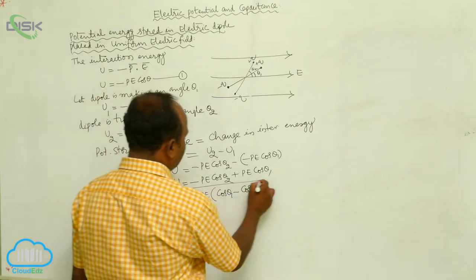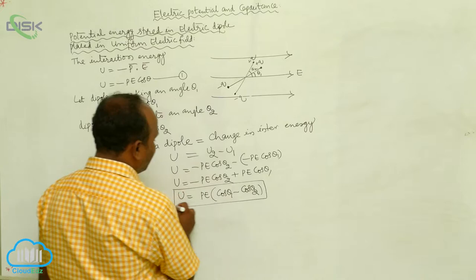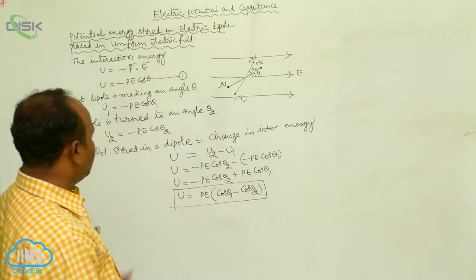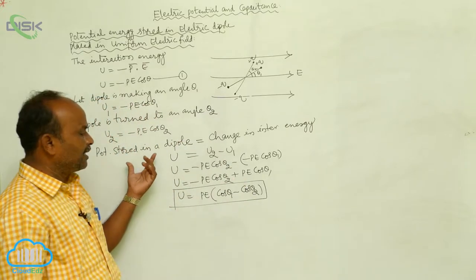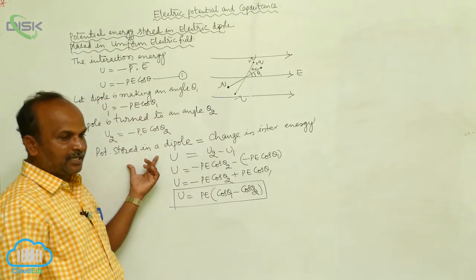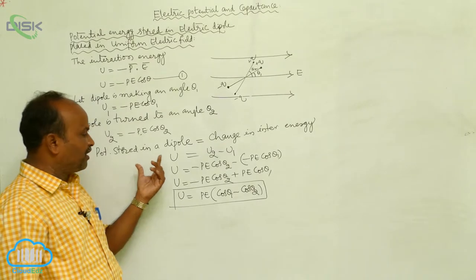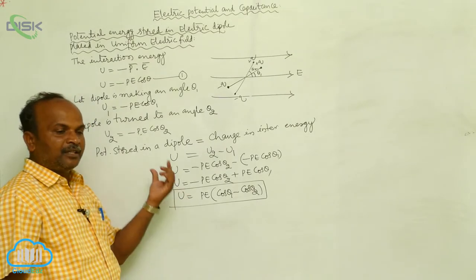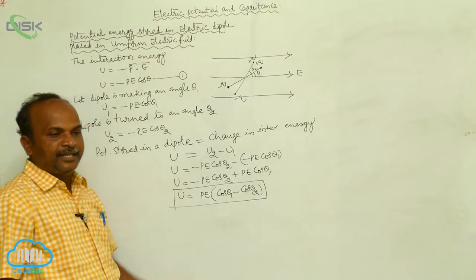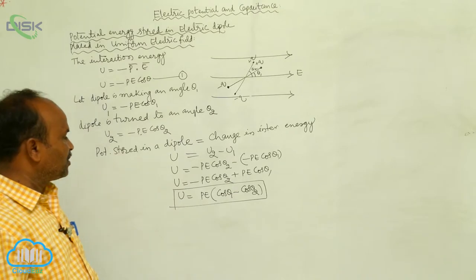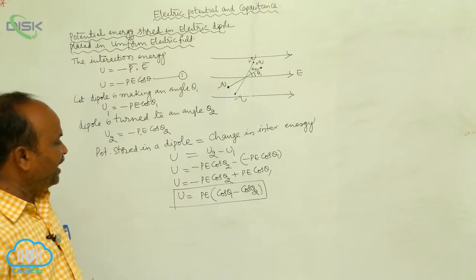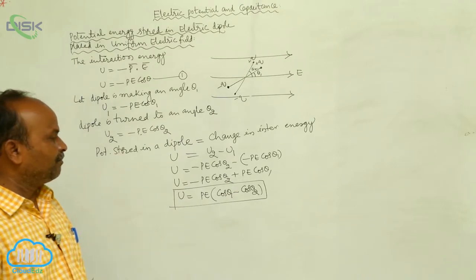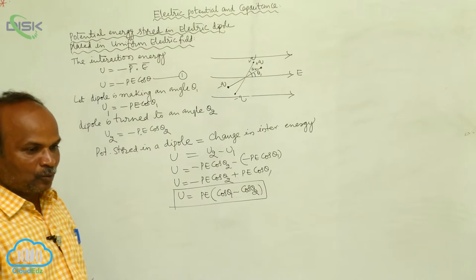This is the change in interaction energy. That change in interaction energy is stored in the form of potential energy. The potential energy expression is U = Pe(cosθ₁ − cosθ₂).